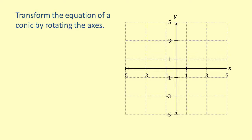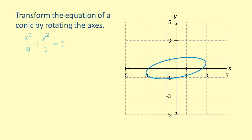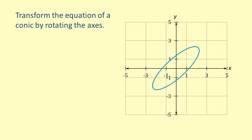Begin by graphing the ellipse given by the equation x squared over 9 plus y squared over 1 equals 1. Now, imagine rotating the ellipse 45 degrees counterclockwise, which gives us a conic section with a graph that is not aligned to the x or y axis.